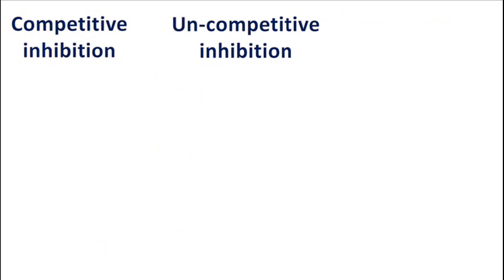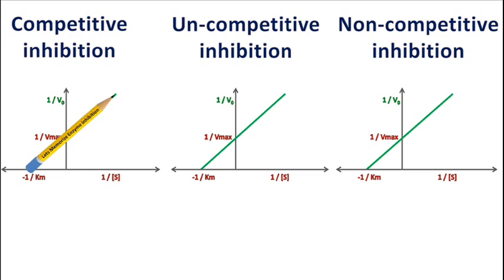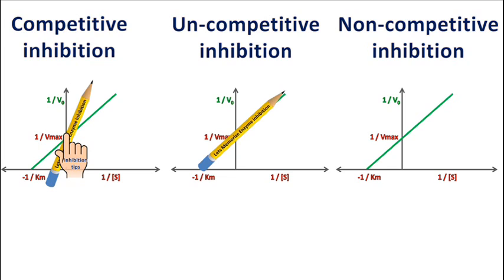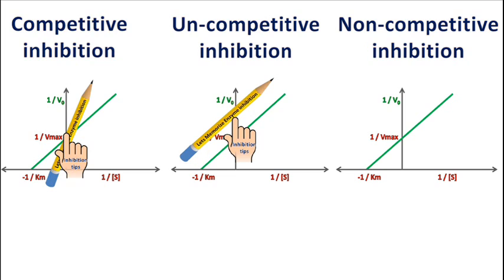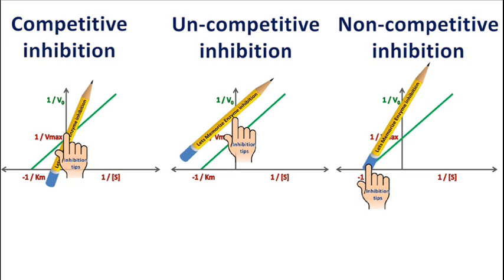Let's revise this technique. For competitive inhibition, hold the pencil at 1/Vmax and rotate in the anti-clockwise direction. For uncompetitive inhibition, push the pencil in the upward direction. And for non-competitive inhibition, hold the pencil at -1/KM and rotate the pencil in the anti-clockwise direction. Thank you.